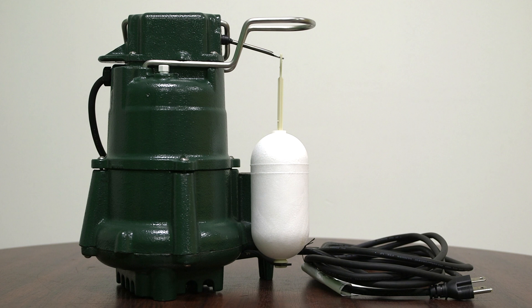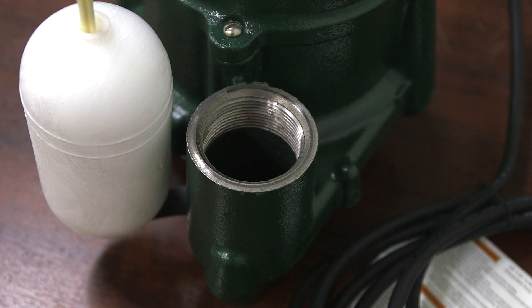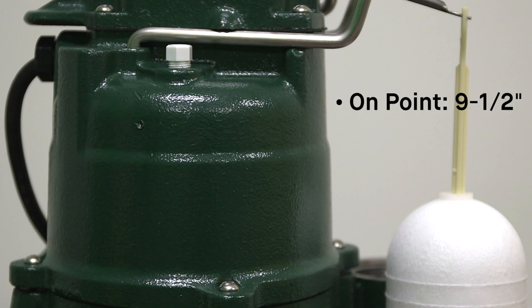The maximum temperature for effluent or dewatering is 130 degrees Fahrenheit. It also passes ½ inch spherical solids and has a 1.5 inch NPT discharge. It has an on point of 9.5 inches and an off point of 3 inches.